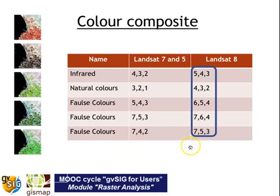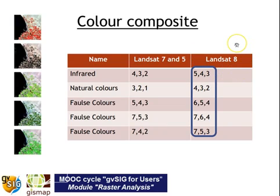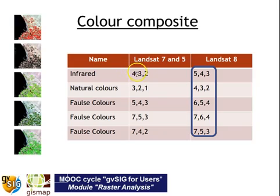When downloading Landsat family images, remember that Landsat 8 has an additional band at band 1. So if you want to compare color composites from Landsat 7 and 5 with Landsat 8, the color composite 4-3-2 of Landsat 7 and 5 corresponds to the combination 5-4-3 of Landsat 8. You cannot directly compare the same color combination numbers between these sensors.